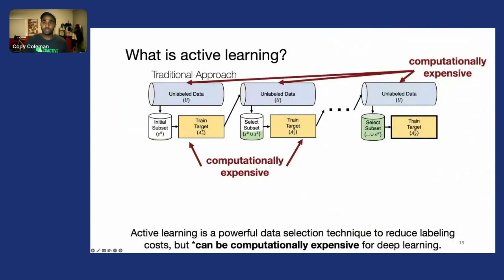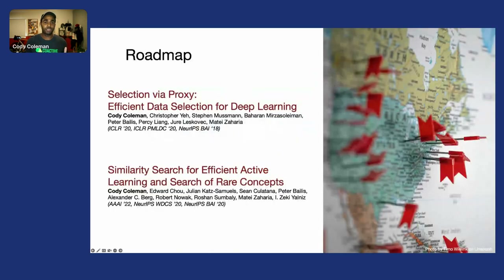Today I want to talk about two pieces of research that address these computational bottlenecks. First, Selection by Proxy, which appeared at ICLR 2020—I was super fortunate to work with amazing researchers from Stanford on this.